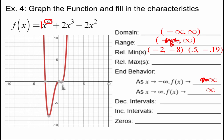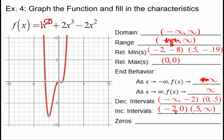There is one relative maximum at (0, 0) because the graph goes down, then up, then down, then up. For the increasing and decreasing intervals: the graph decreases from negative infinity to −2, increases from −2 to 0, decreases from 0 to 0.5, then increases from 0.5 to infinity.